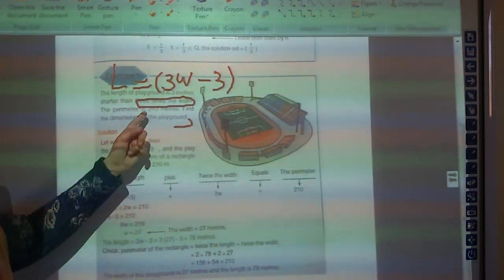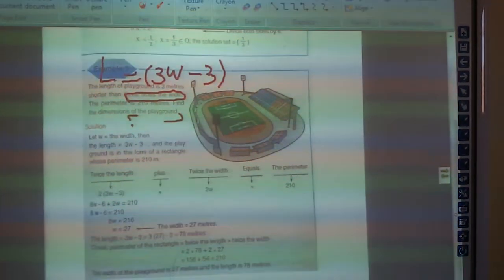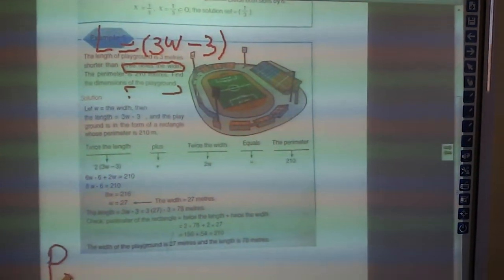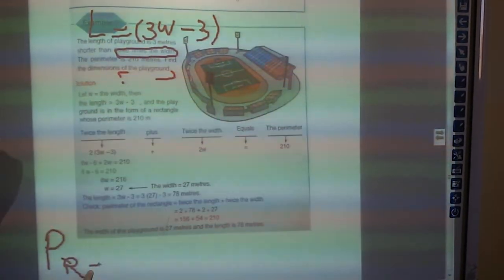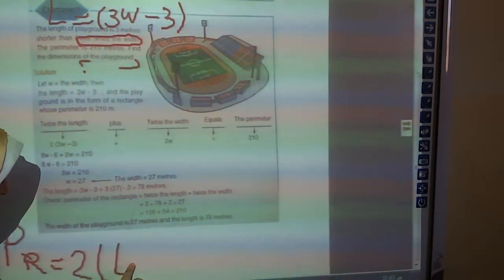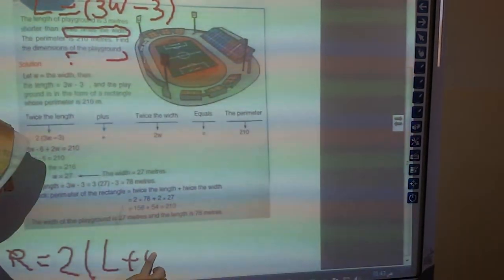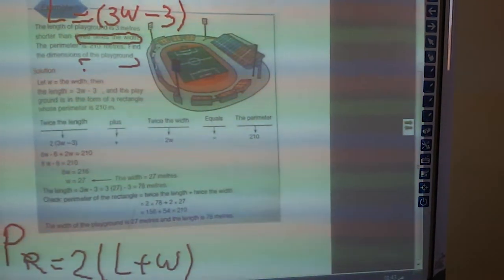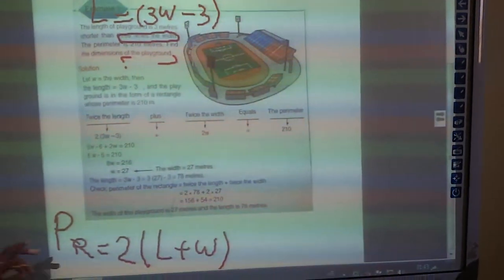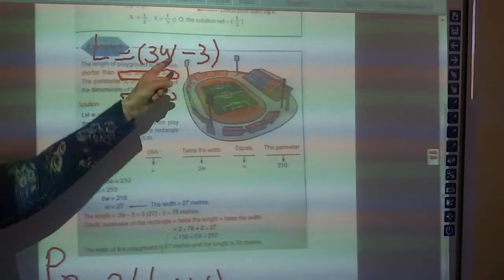He's telling me the perimeter is 210. Do you remember the rule of the perimeter? The perimeter of rectangle equals 2 times length plus width. Very good.